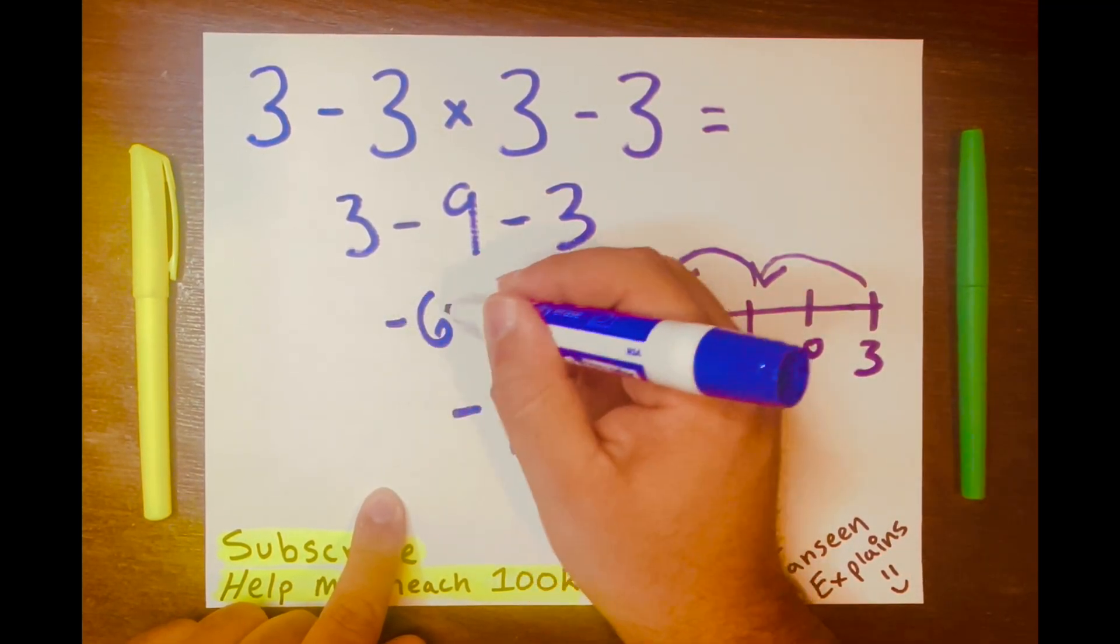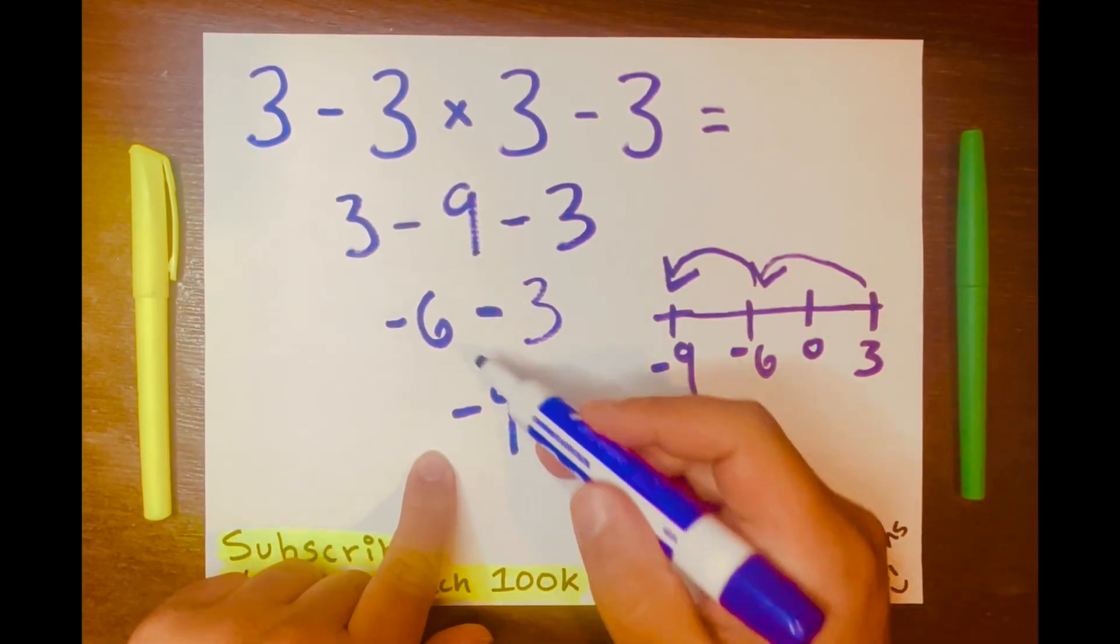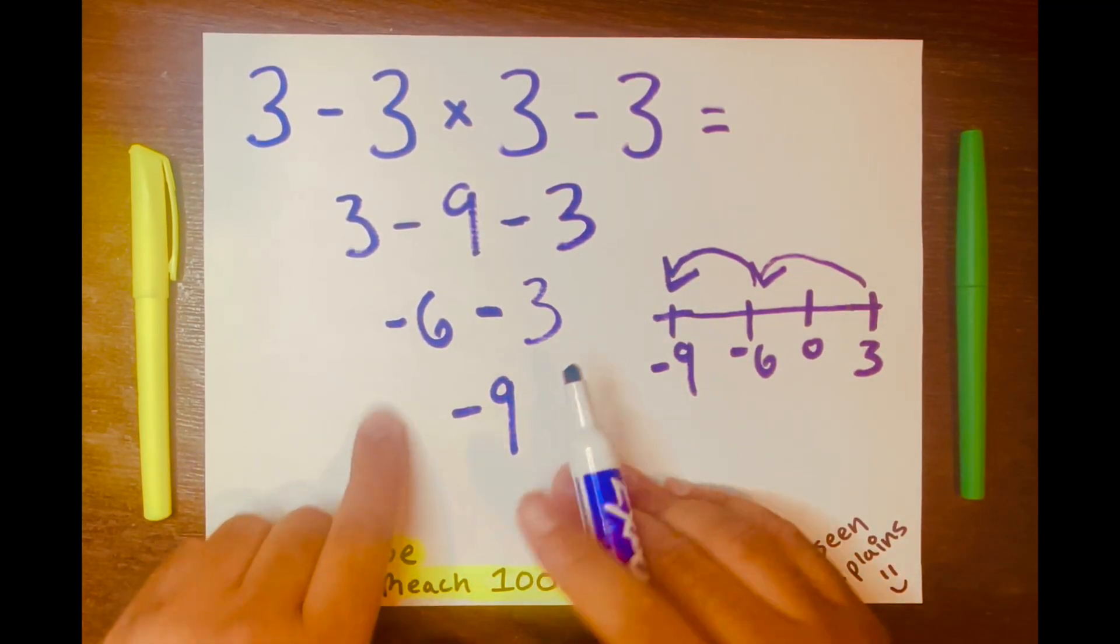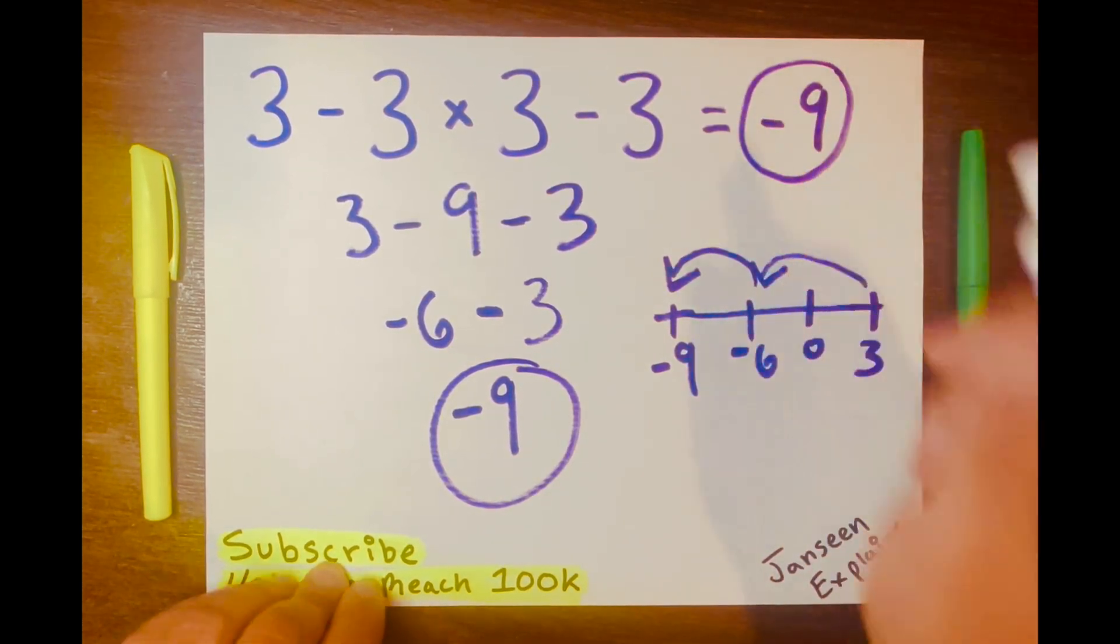So negative 6 minus 3 is negative 9, or you just add and keep the sign of the bigger number. So the answer is negative 9, and there you go.